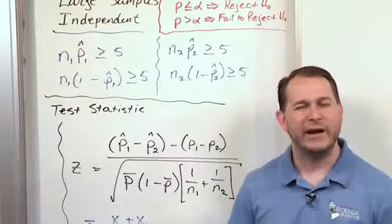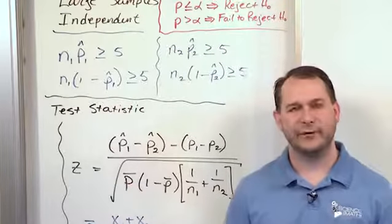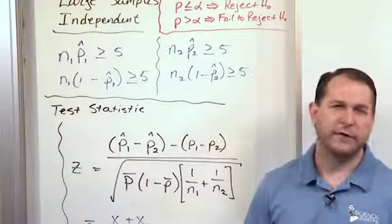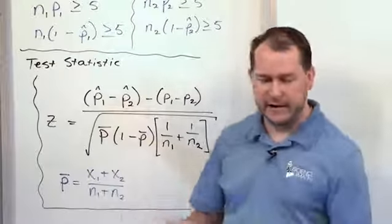We're also assuming that these are independent. This obviously makes sense. I mean, we're studying women in one case and men in the other case, so there's no way there could be any overlap. They're going to be separate groups of people. So because all this is met, we can use the normal distribution and this test statistic to get where we want to go.